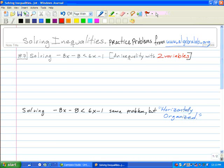Solving negative 8x minus 8 is less than 6x minus 1. There are variables on both sides of the inequality, so we have to combine like terms. X is on one side and numbers onto the other side.